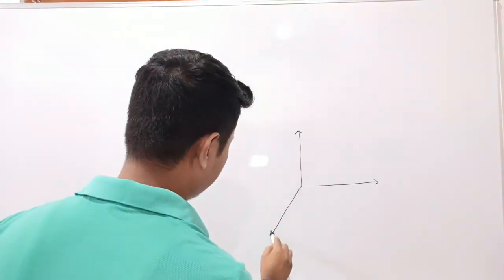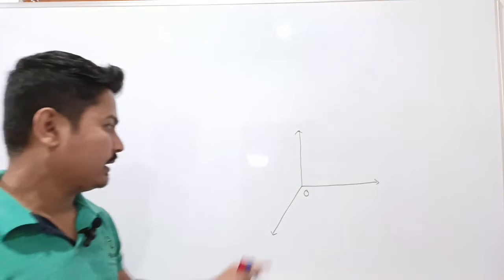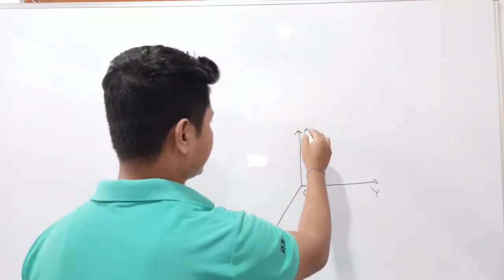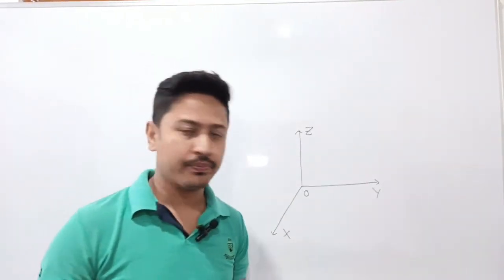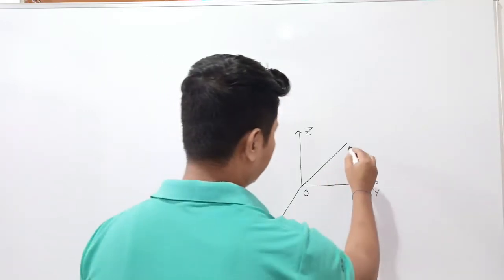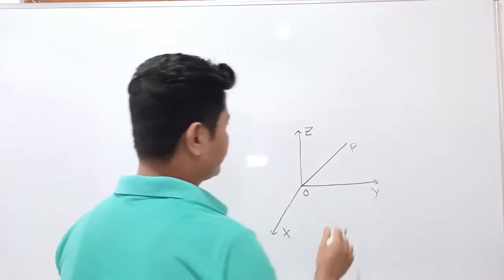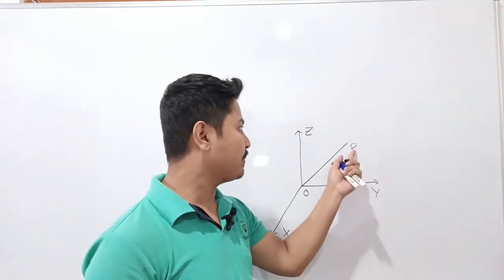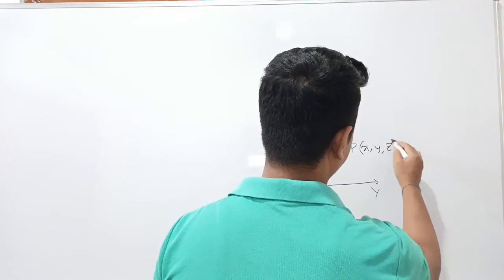This is the Cartesian coordinate system. Here, 'O' is the origin. This is the y-axis, this is the z-axis, and this is the x-axis. Now suppose we have a line OP, where P is a point with coordinates (x, y, z).